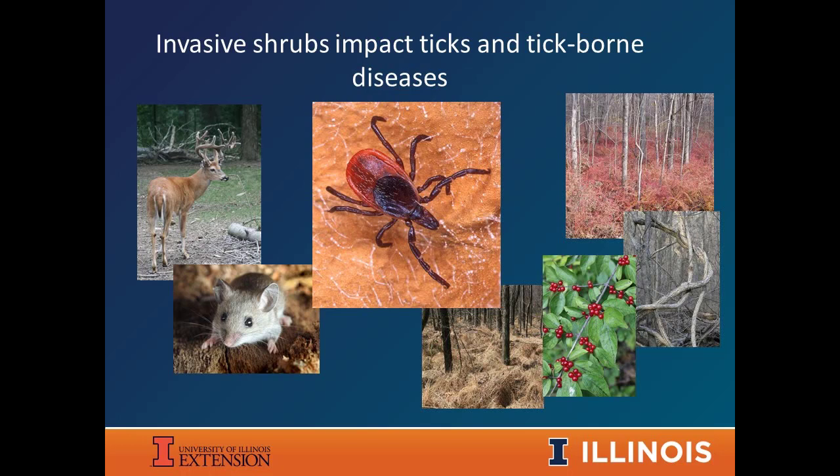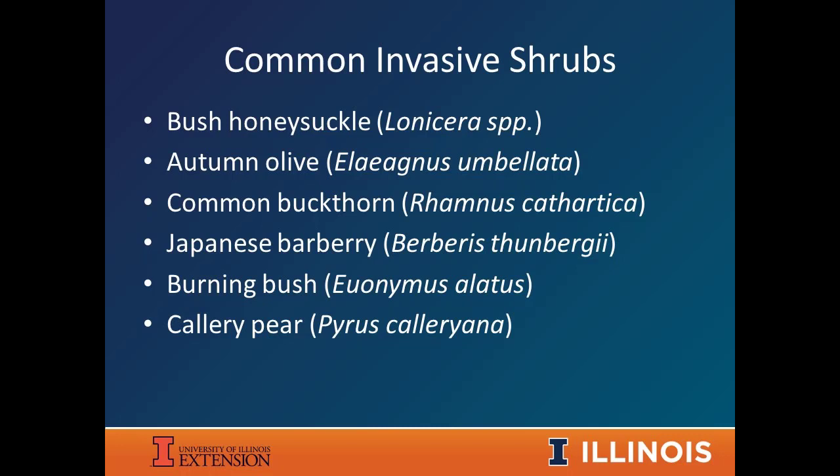A big health concern we're learning more about is tick-borne diseases and how they're strongly related to the presence of invasive shrubs. These tick species get in close proximity to the small mammals they need to pick up diseases from. One study found 130 to 300 infected ticks per acre in an invaded forest, compared to just 3 to 30 in a natural forest. So the chances of human health issues from invasive shrubs are very severe.